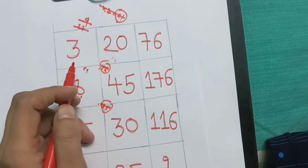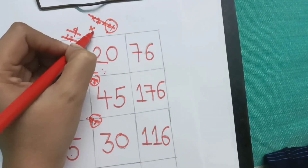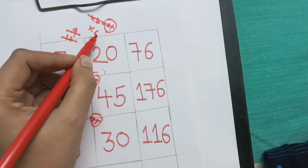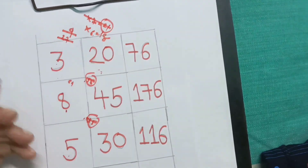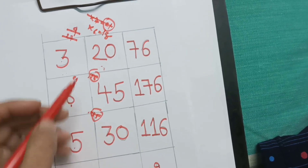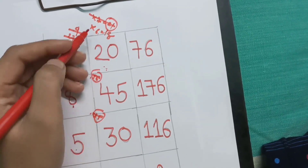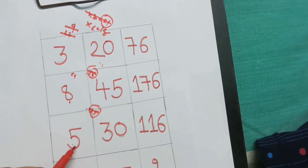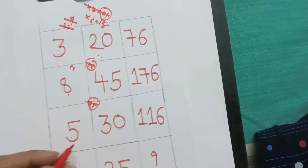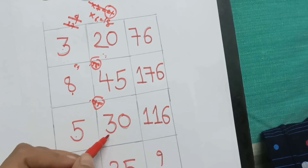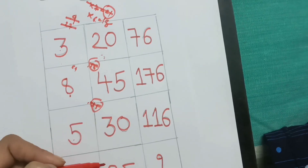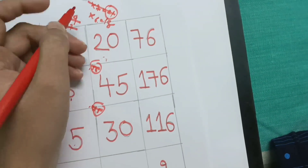Then we can try 6. If we use 6: 3 sixes are 18, and 8 sixes are 48. With 18, 48, and 6 fives are 30, we get an exact number, so that is not a valid pattern for this puzzle either.